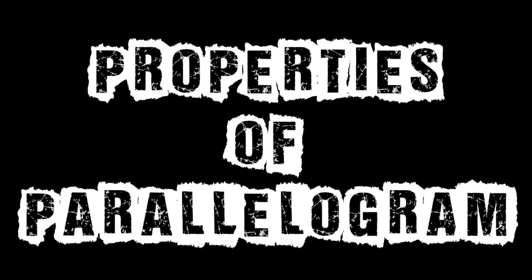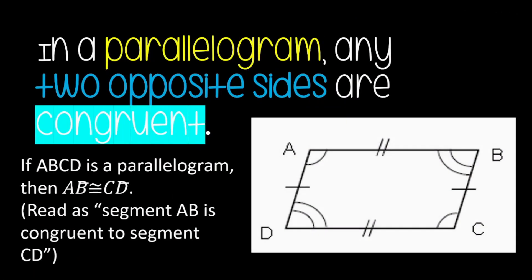Properties of Parallelogram. In a parallelogram, any two opposite sides are congruent. And we have the example on the right side, the Parallelogram ABCD.